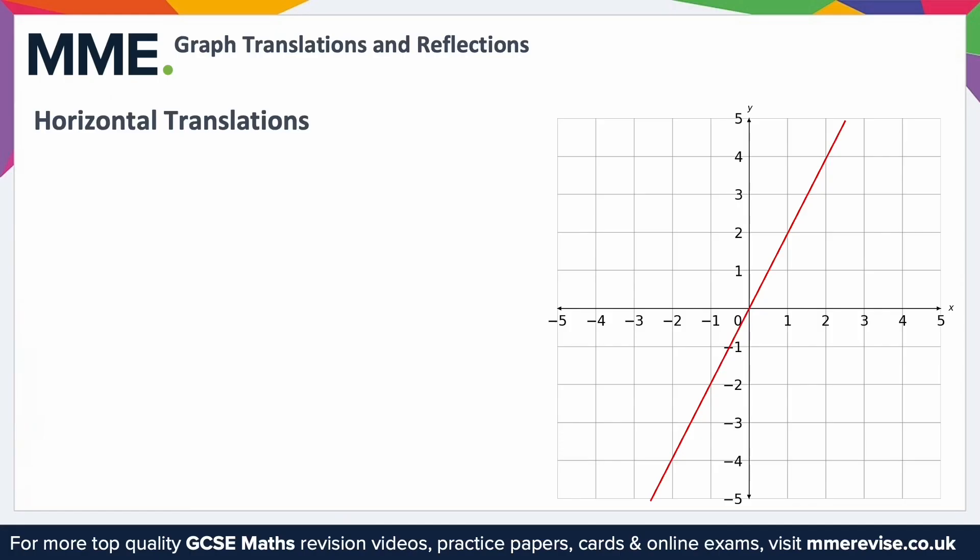Horizontal translations move the graph left and right along the x-axis. For example, you can see here the straight line y equals 2x. If you pick a point on this graph, for example this point here, you can see x is 2, y is 4. If we want to shift it to the right as a horizontal translation, we then need x equals 3 to give us the same output y is 4.